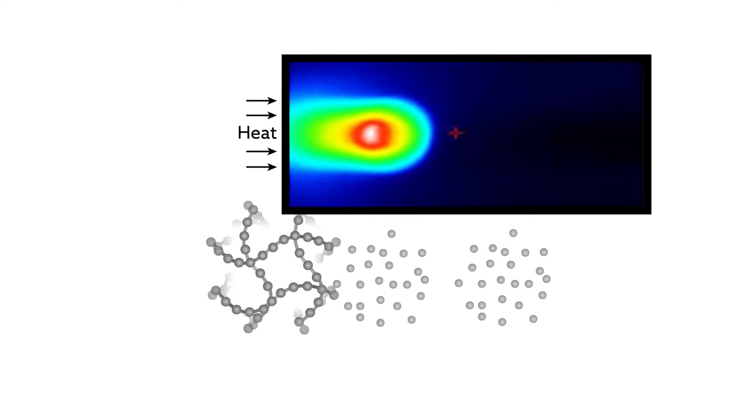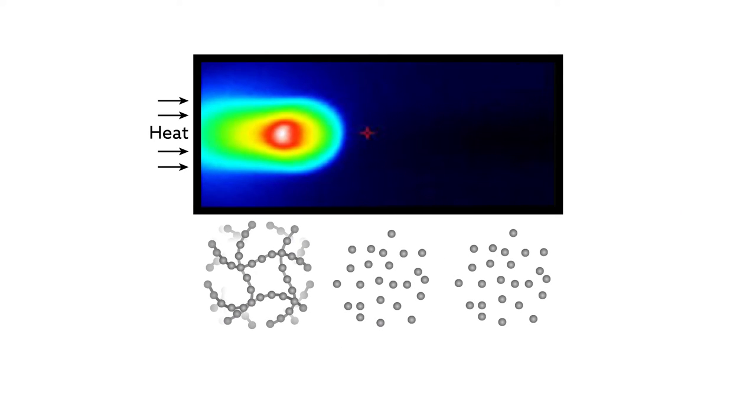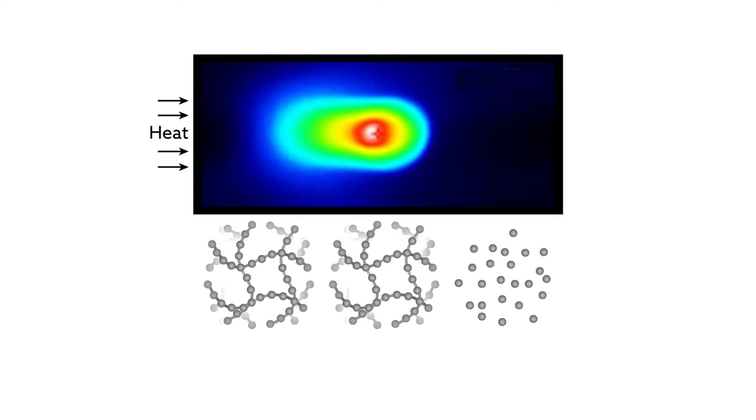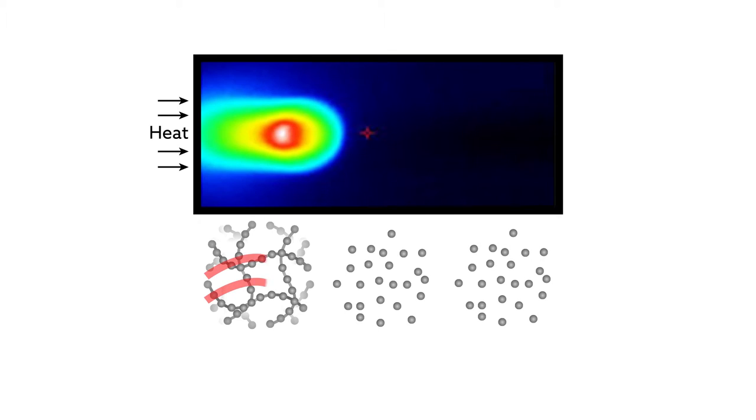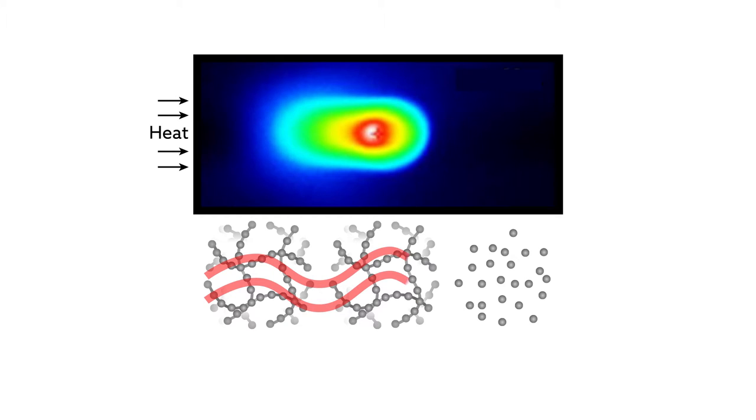Frontal polymerization was originally developed as a way to link building block molecules called monomers together to form a polymer. In this technique, heating one end of a gel causes the monomers in this region to bind together. This reaction releases heat, which dissipates to the neighboring monomers and triggers their polymerization.